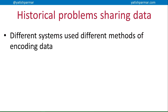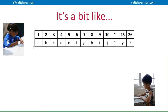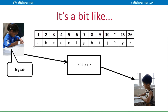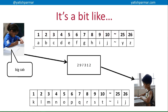Back in the day, different computer systems had different methods of encoding data — there were around 60-odd popular methods. Blue kid is sending a message to kid in the vest, encoding it using her system as 297312, and sends it off. Vestie kid, however, has his own system for encoding the data, so when he tries to decode it he has no idea what the data actually means. You ended up with another system in the middle having to translate the data from one system so it could be interpreted by another.